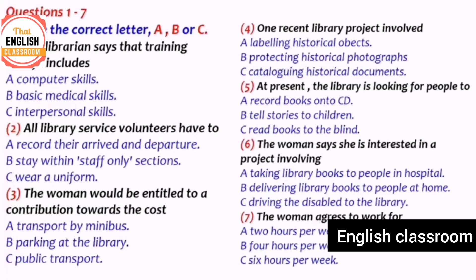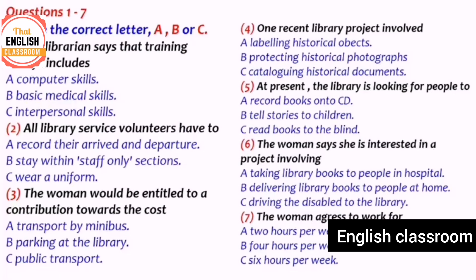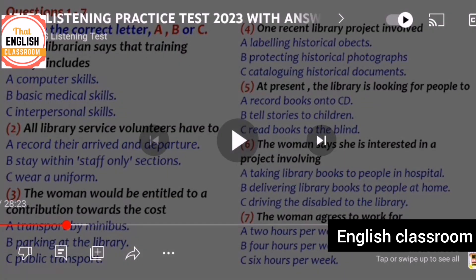For question six, the woman says she is interested in a project. The librarian says there is another long-established scheme helping those who are unable to have direct access to the library — perhaps due to disability or illness. The woman recalls seeing someone with a trolley of books at the hospital.